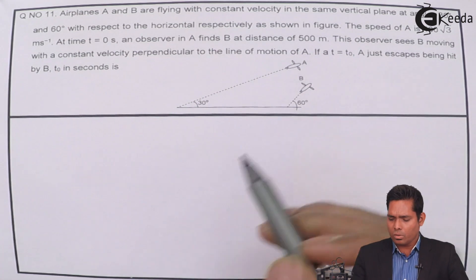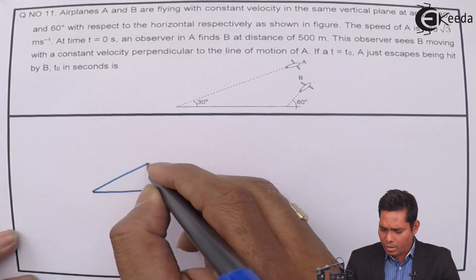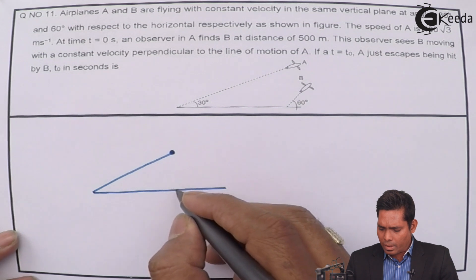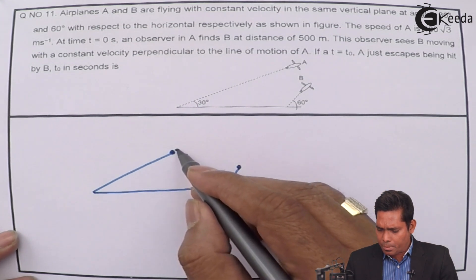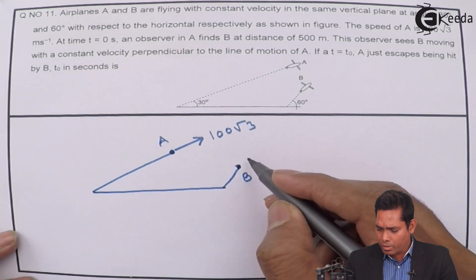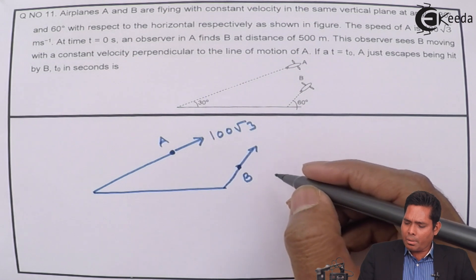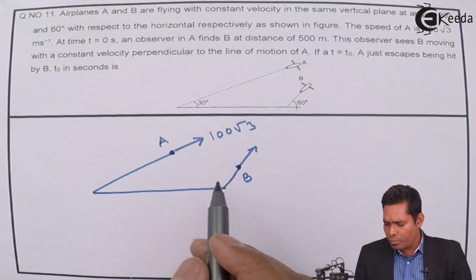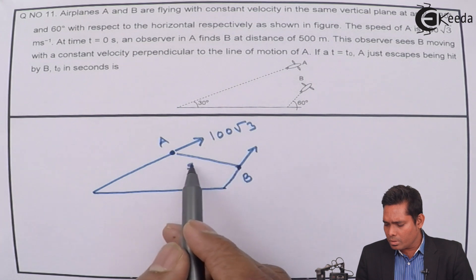Let me draw a diagram. This is the horizontal. A is moving at 30° with speed 100√3 m/s, and B is moving at 60°. The speed of B is not given. At time t = 0, observer A finds B at a distance of 500 meters.